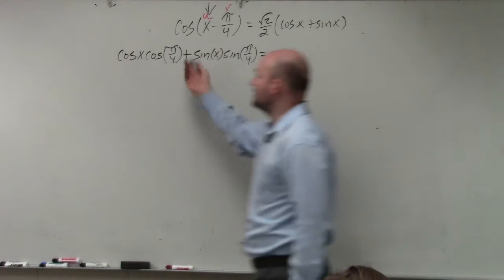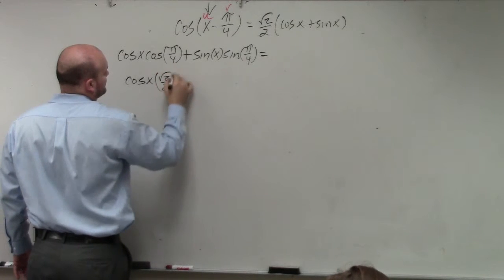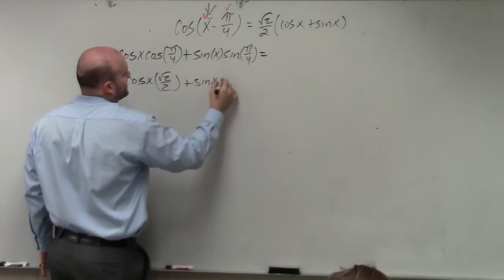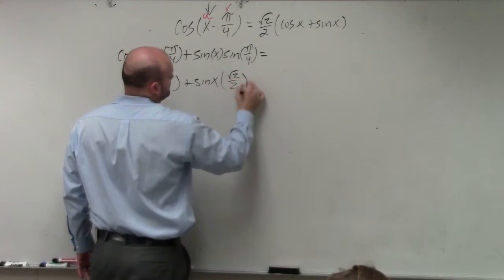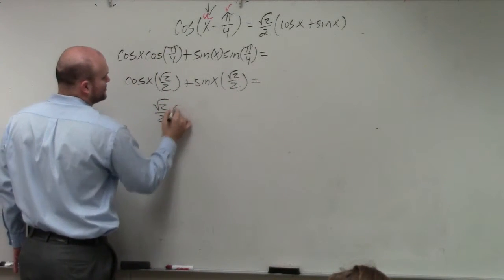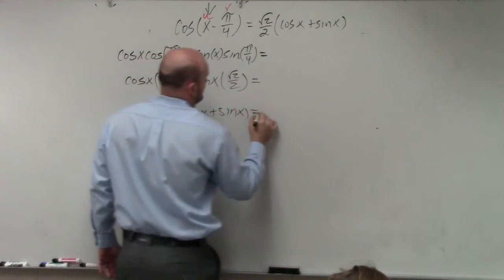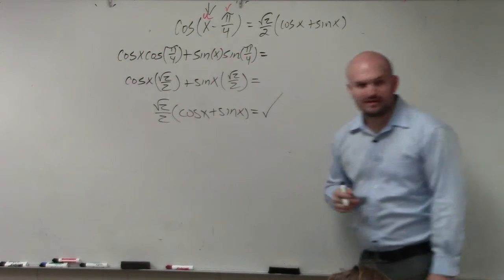So now if you just simplify, you would have cosine of x times square root of 2 over 2 plus the sine of x times square root of 2 over 2. Then you can see they both share a square root of 2 over 2, so you factor that out. And there you go - verified. Done.